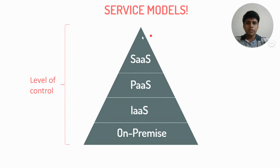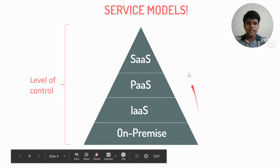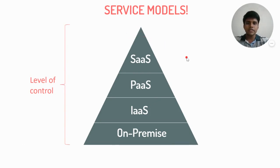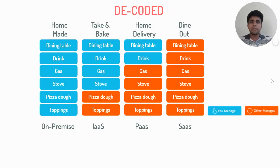Now we would have come across this common diagram in our study material — what does it signify? It signifies the level of control that each of the service models has. This diagram can be complex to understand, so let's try and decode it. The cloud computing delivery models are divided based on the level of control of the user. We will equate the situation of eating a pizza with the delivery models to understand the concept better.